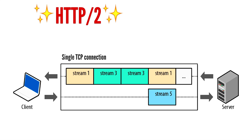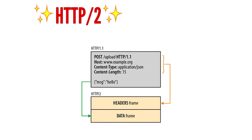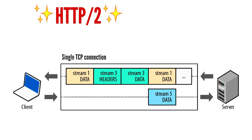Clients can specify dependencies and weights for each stream — you can say a stream is only useful if another has completed, and weights distribute bandwidth more appropriately. However, this feature is on the client side only right now and hasn't been exposed server-side yet. The connection is split into frames: the most important are header frames and data frames. All of this is end-to-end encrypted because TLS is enabled.